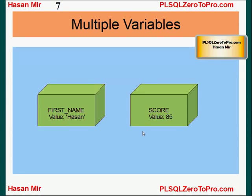You can declare multiple variables in your program, each variable containing some different value. You can refer to these values through other statements in your program. For example, variable first name contains the text literal Hassan, and variable score contains the numeric value 85. Always use single quotes if you're putting text literals in the variable, just like you saw in SQL tutorials.